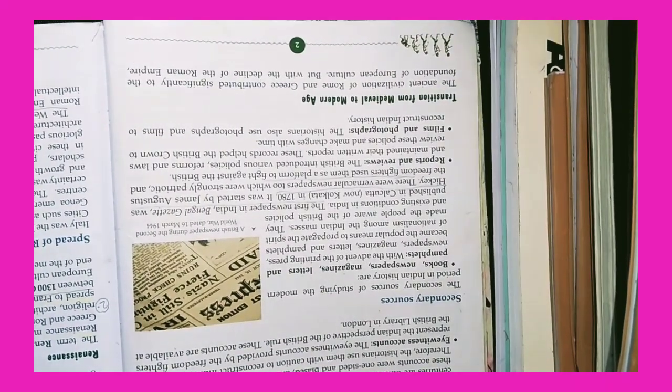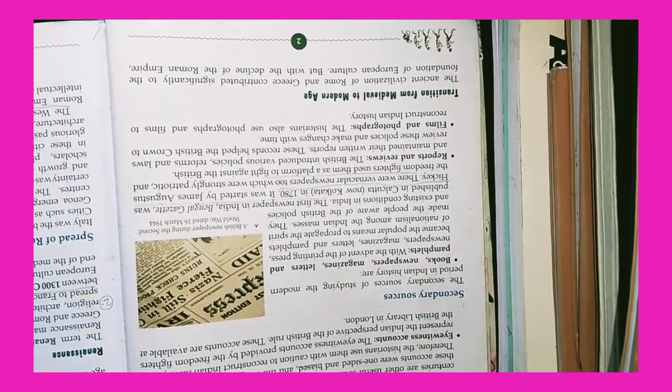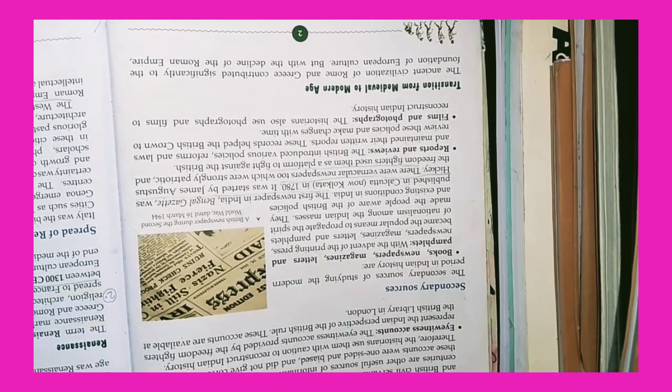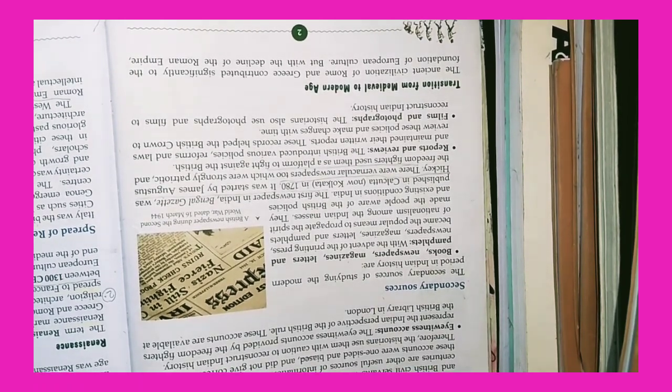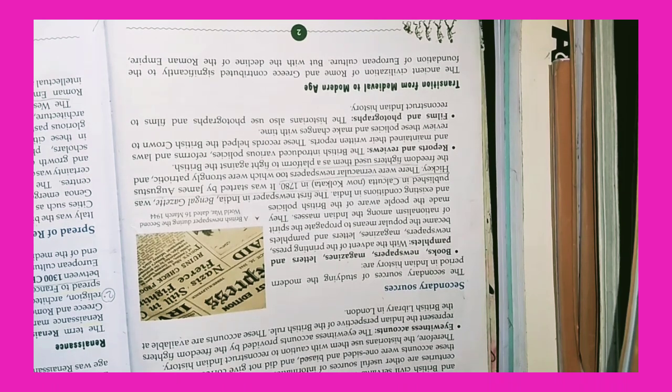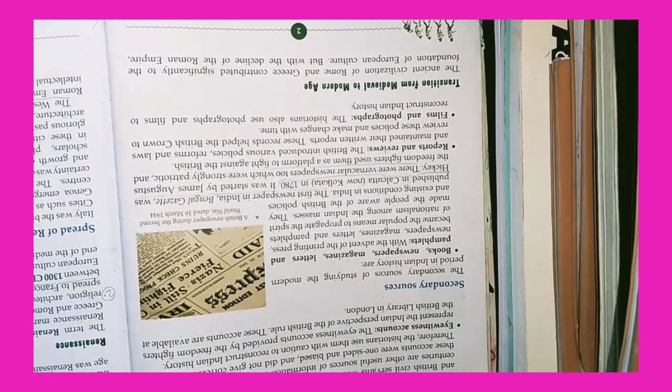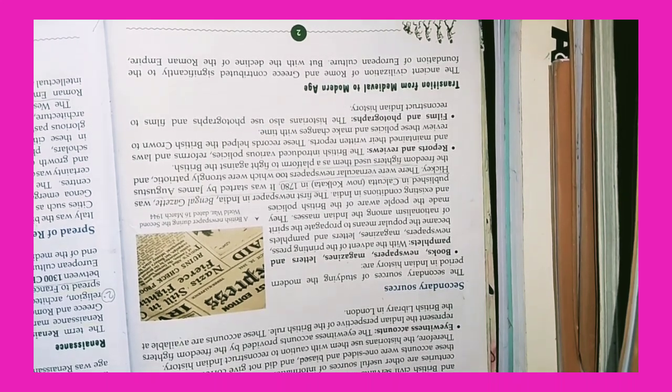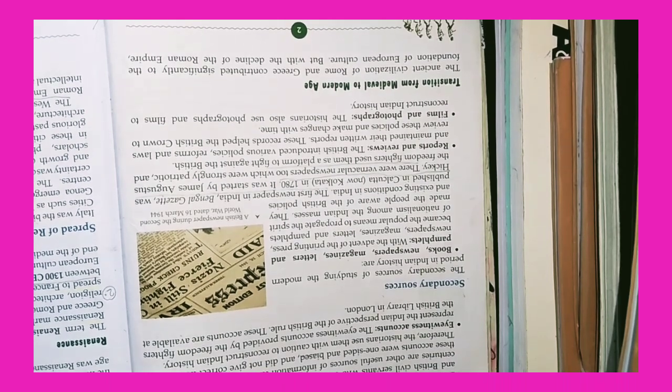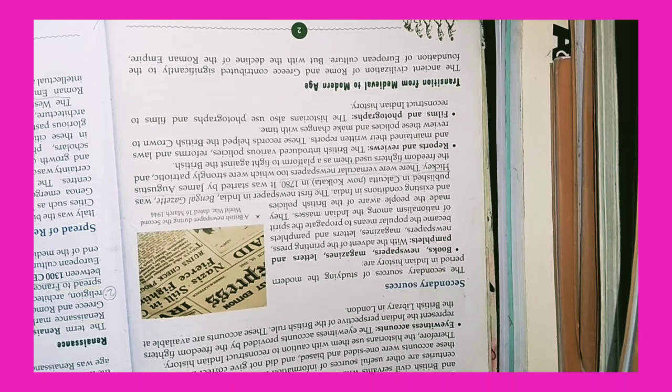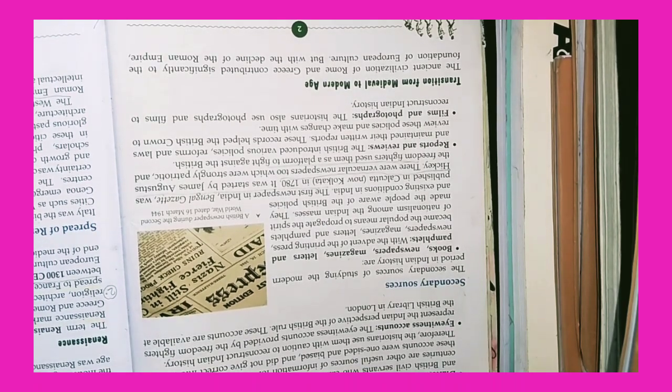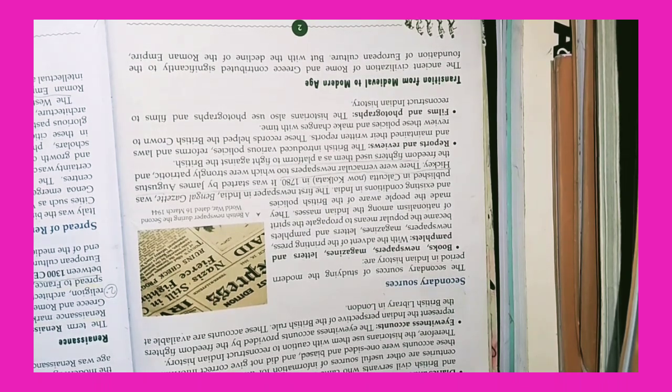Secondary Sources: The secondary sources of studying the modern period in Indian history are Books, Newspapers, Magazines, Letters and Pamphlets. With the advent of the printing press, newspapers, magazines, letters and pamphlets became popular means to propagate the spirit of nationalism among the Indian masses. They made people aware of British policies and existing conditions in India. The first newspaper in India was Bengal Gazette, published in Calcutta (now Kolkata) in 1780, started by James Augustus Hickey. There were vernacular newspapers to which strongly patriotic freedom fighters used as a platform to fight against the British.